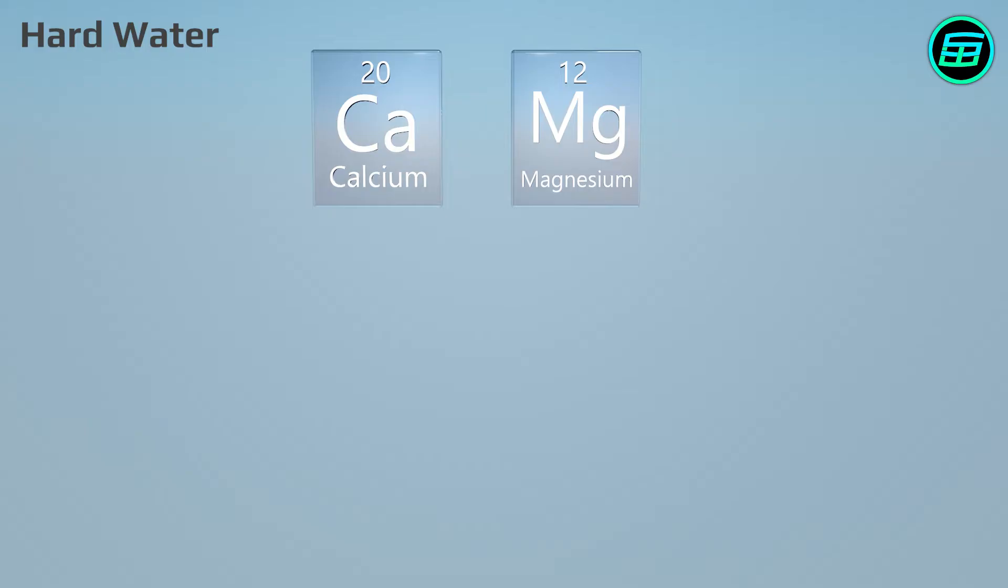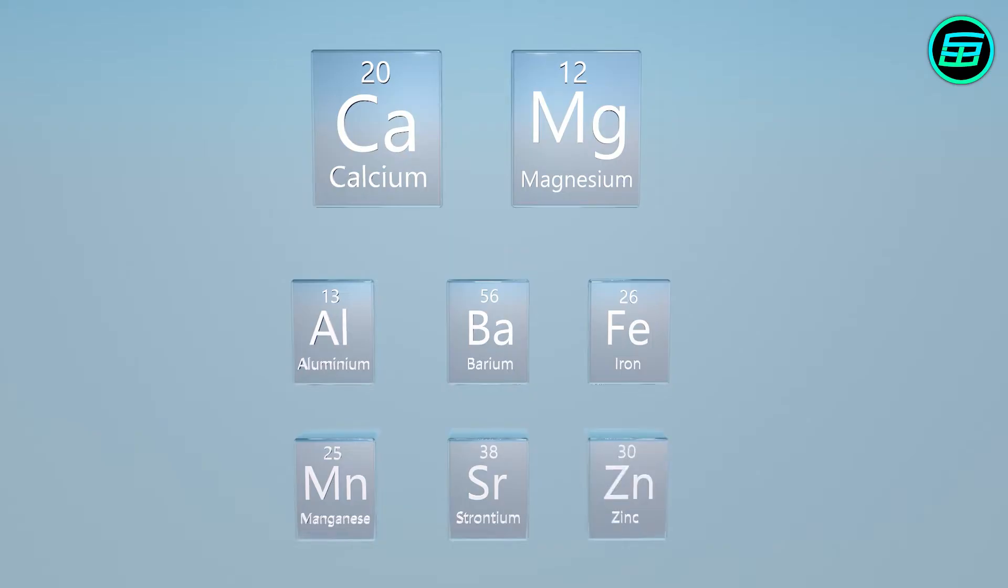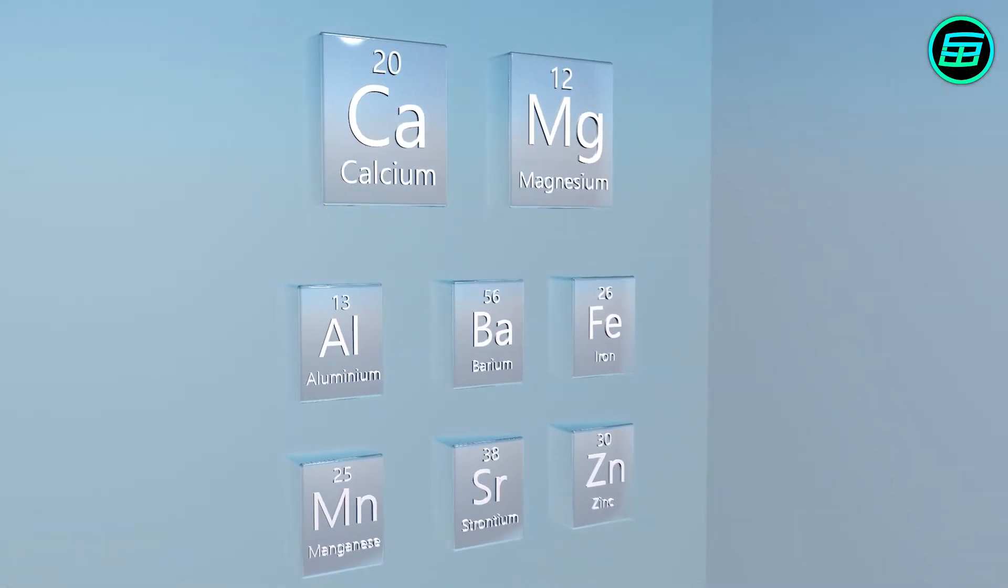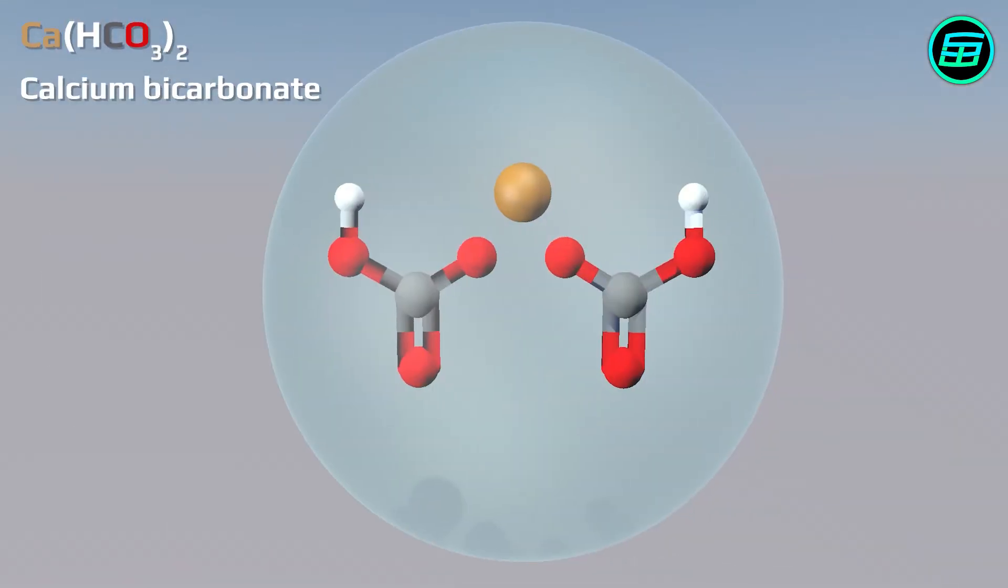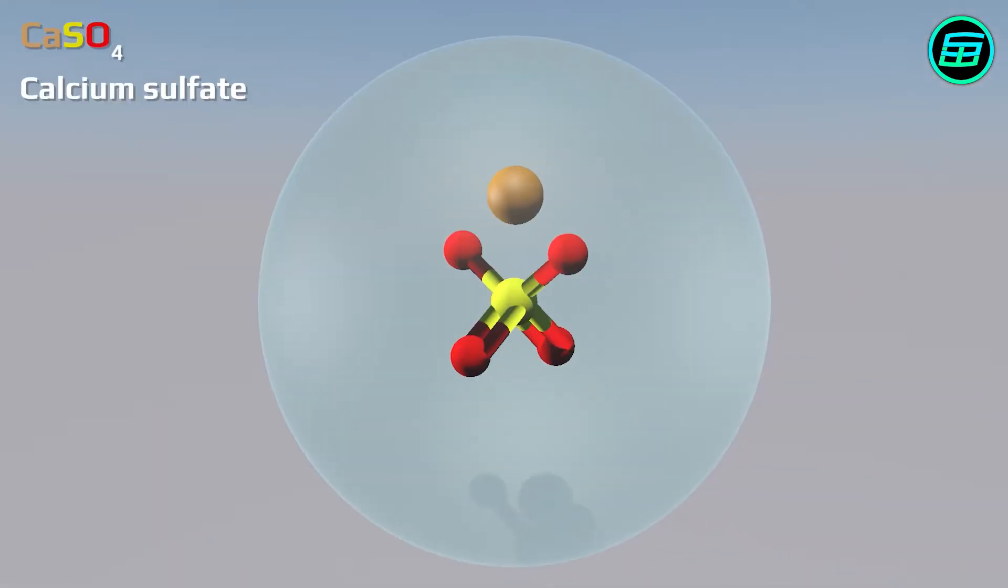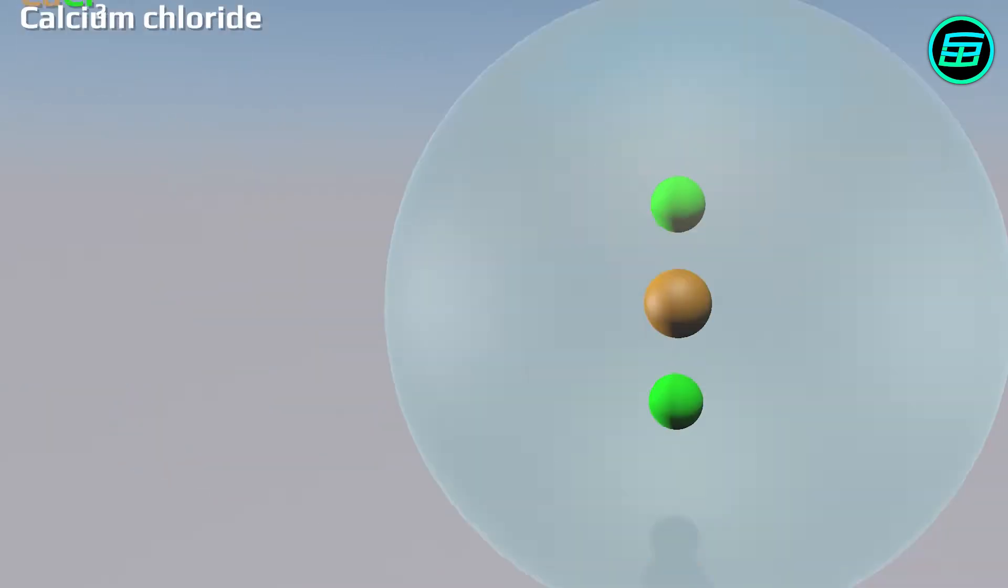Some other metal ions, such as those of aluminum, barium, iron, manganese, strontium and zinc also contribute to the hardness of water. These ions are found in water in the form of carbonates, bicarbonates, sulfates and chlorides.